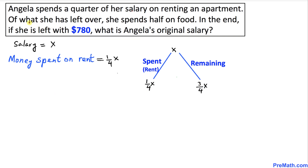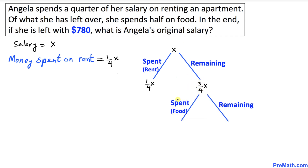Now let's focus on the second part of the problem. Of what she has left over, she spends half on food. Half means one over two. In our case, the left over amount is three-fourths of X, so the money spent on food is going to be one-half times three-fourths of X.